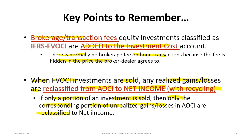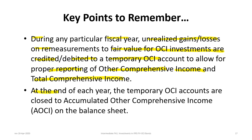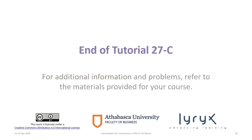We saw that we had to take all of the remeasurement relating to the bonds sold, plus only a proportion of the prior remeasurement balance. During a fiscal year, unrealized gains and losses on remeasurements are credited or debited to a temporary OCI account, allowing proper reporting of OCI and total comprehensive income on the income statement. At year end, those temporary accounts are closed to accumulated OCI on the balance sheet. That concludes Tutorial 27C — we hope you found it useful. For additional information and problems, go back to your course materials.